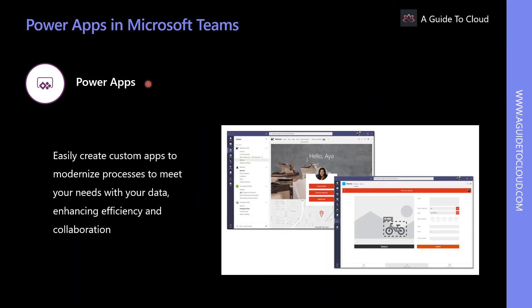Power Apps is a high productivity application development platform from Microsoft. The platform can be used to customize everything from a simple SharePoint form to immersive end-to-end solutions. Combined with Microsoft Teams, Power Apps can be used to build a modern workplace through custom tabs and apps in an app bar, with little to no code.